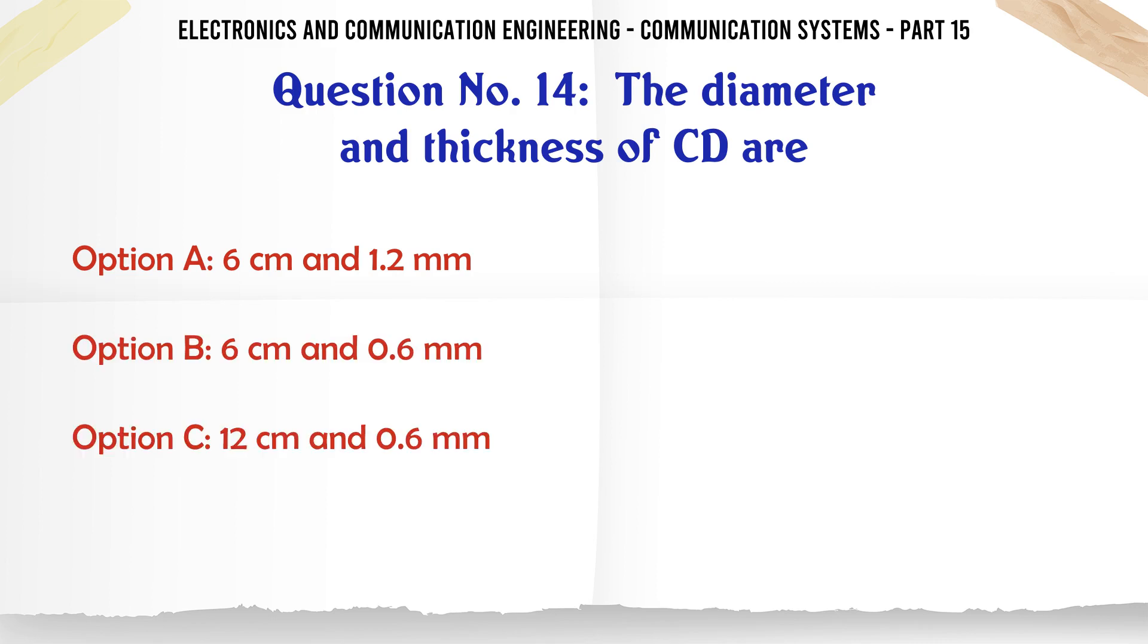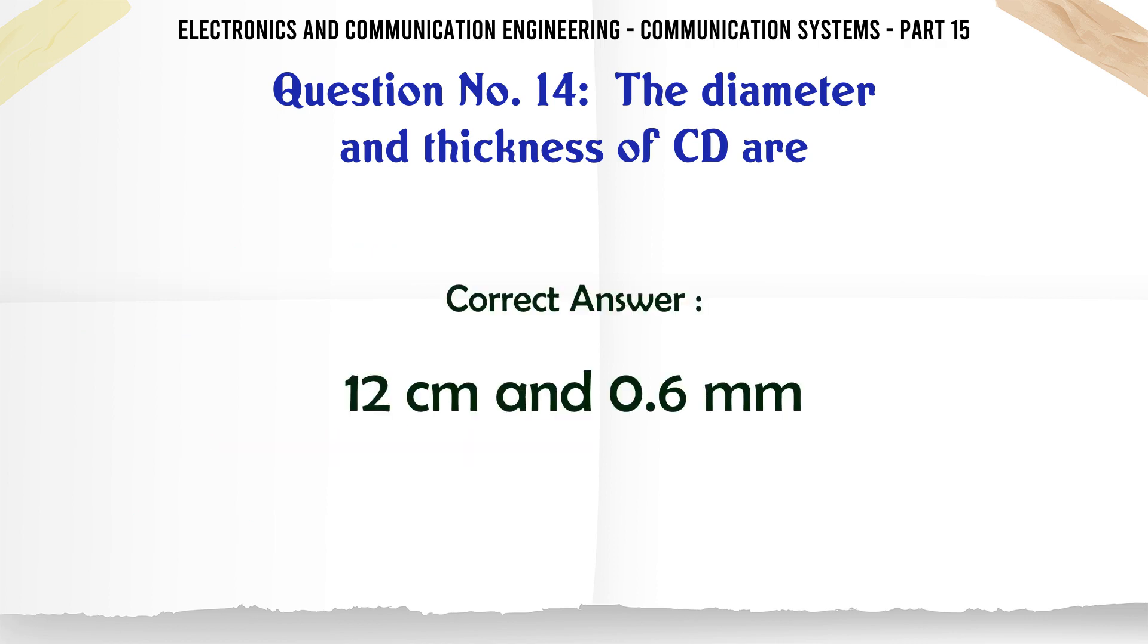The diameter and thickness of CD are: a 6 cm and 1.2 mm, b 6 cm and 0.6 mm, c 12 cm and 0.6 mm, d 12 cm and 1.2 mm. The correct answer is 12 cm and 0.6 mm.